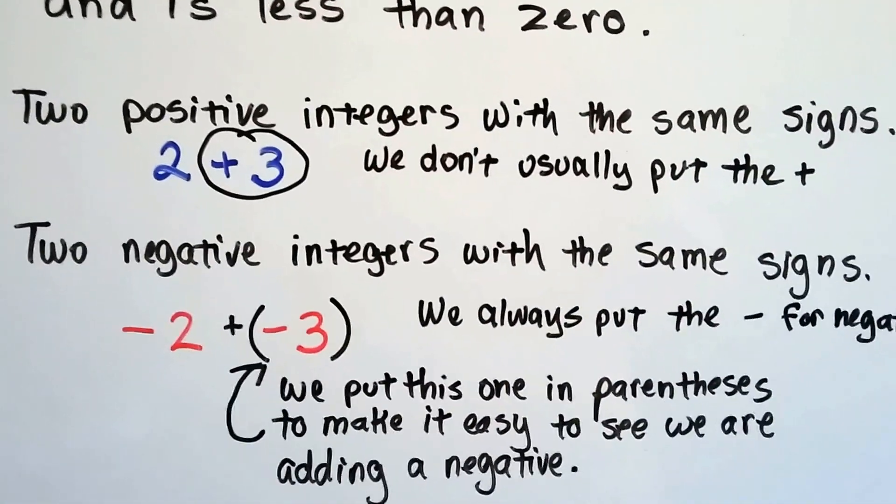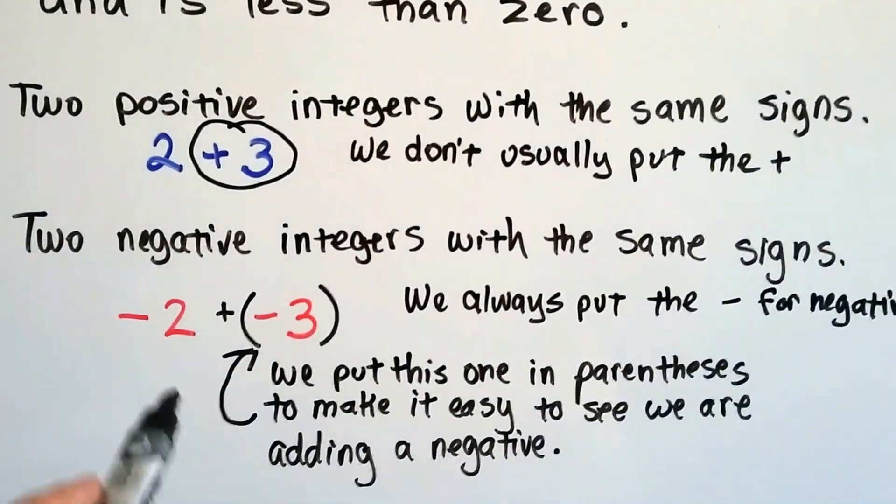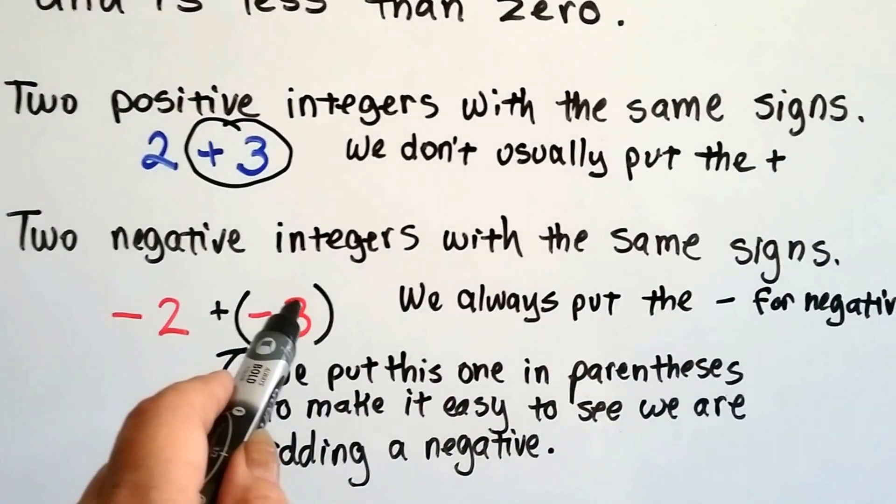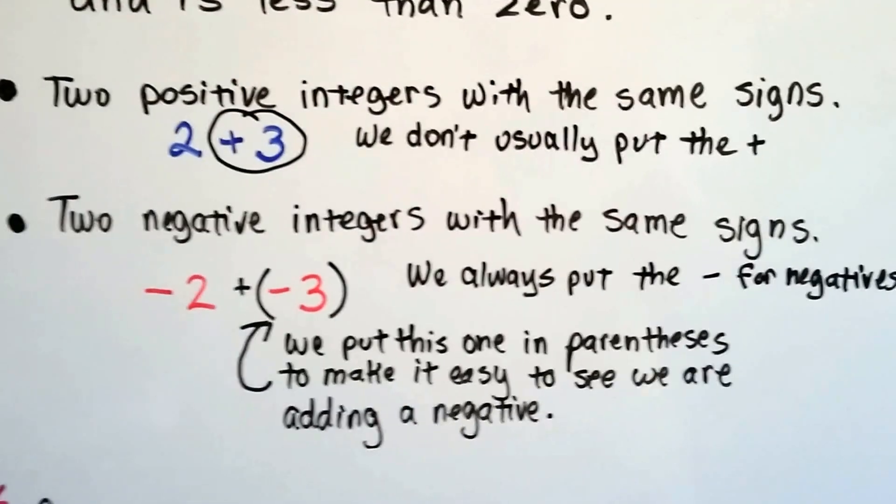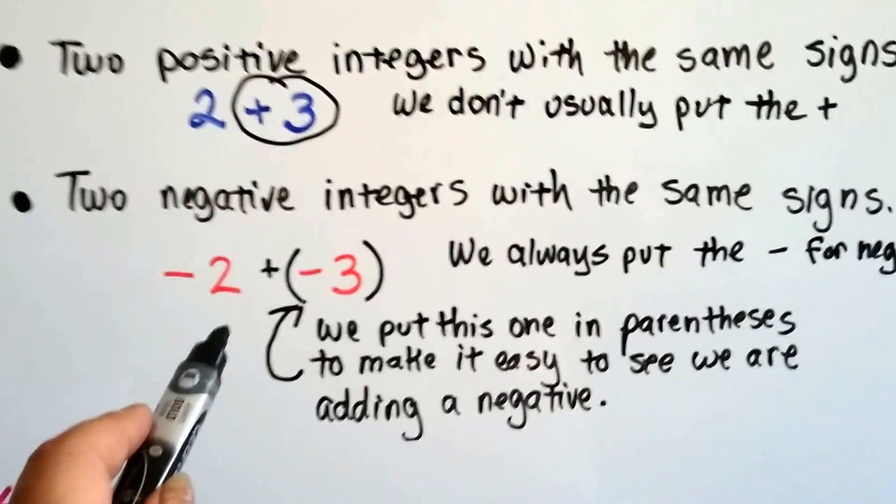Two negative integers with the same signs, negative 2 and negative 3, these are added together. We always put the negative sign for negatives, that way we know they're negatives.